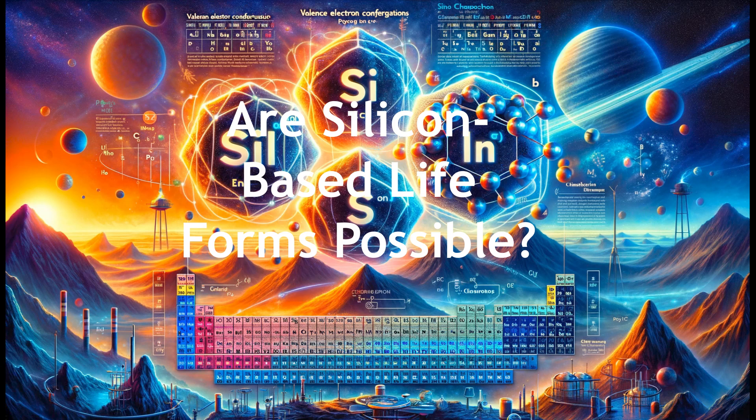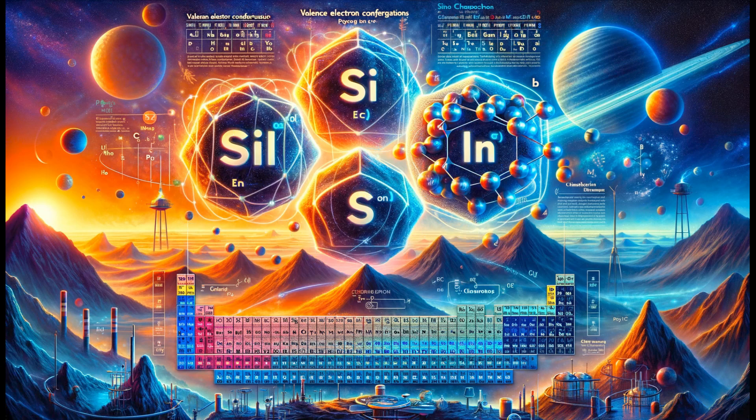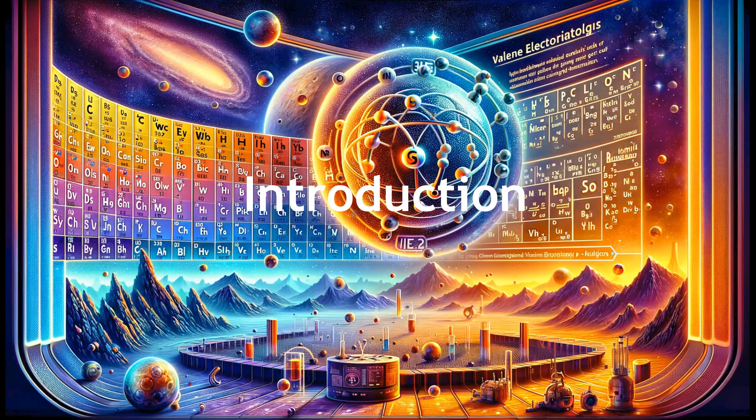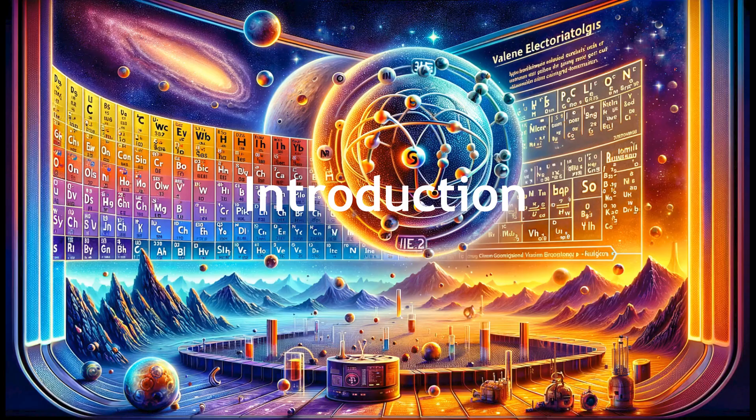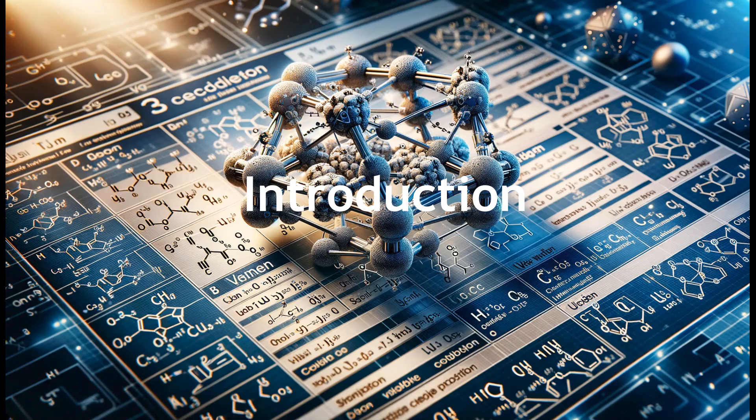Hello, dear viewers. When discussing the potential for silicon-based lifeforms, both refer to period 4 of the periodic table. It is important to understand the basic chemical properties and similarities between silicon and carbon in the group.